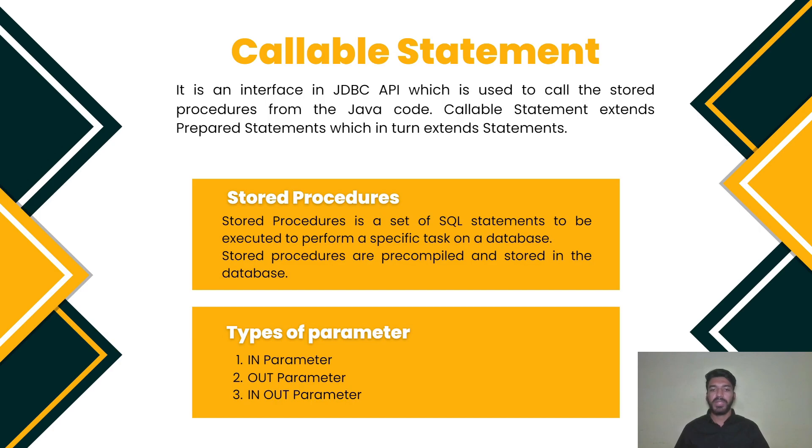We will see types of parameters. IN parameter is a parameter whose value is unknown when the SQL statement is created. OUT parameter whose value is supplied by the SQL statement it returns. IN OUT parameter is a parameter that provides both input and output values.